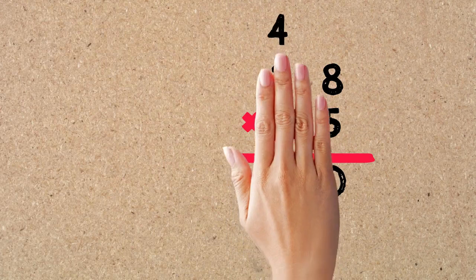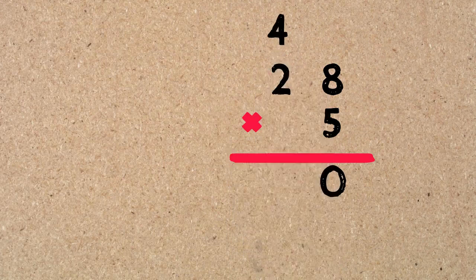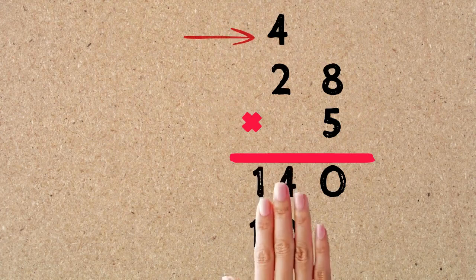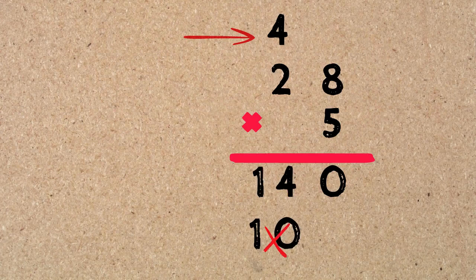For the second step, we multiply the bottom number by the tens digit of the top number. 5 times 2 equals 10. But then we have to add the 4 that we carried to the 10. 10 plus 4 equals 14. So our answer is 140.